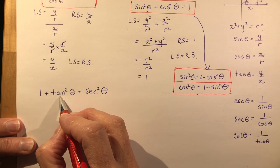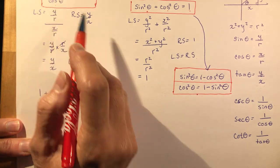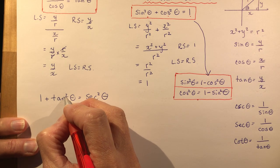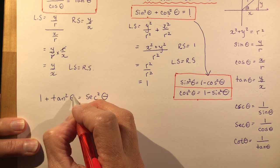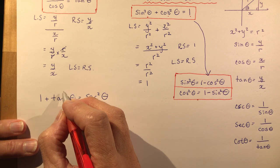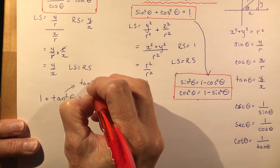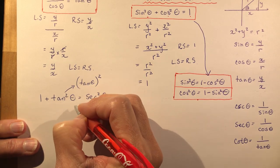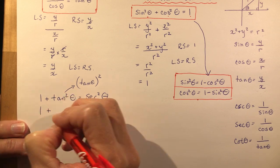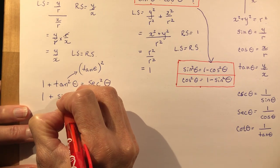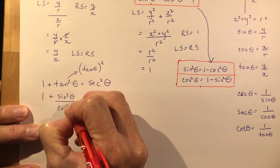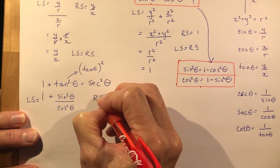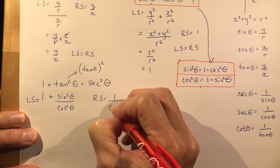Let's prove that one plus tan squared theta equals secant squared theta. Tan squared theta, using the identity tan theta equals sine theta over cos theta, becomes sine squared theta over cos squared theta — the squared just goes beside the function, not after the angle. So tan squared theta means the same as the quantity tan theta, squared. So the left side is one plus sine squared theta over cos squared theta. The right side, secant squared theta, is one over cos squared theta.